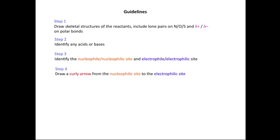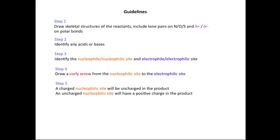In step four, we're going to draw a curly arrow from the nucleophilic site to the electrophilic site. In step five, we're going to recognize that a charged nucleophilic site will be uncharged in the product, whereas an uncharged nucleophilic site will have a positive charge in the product.